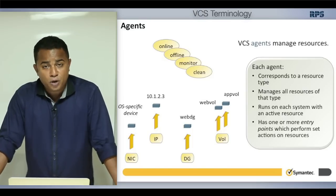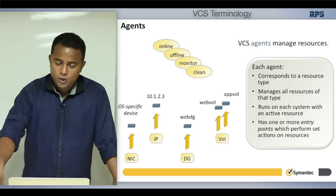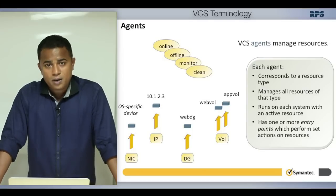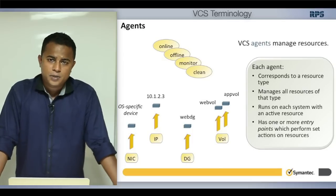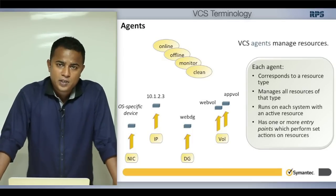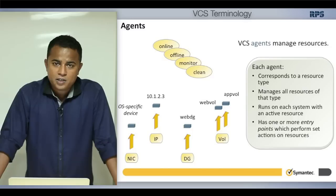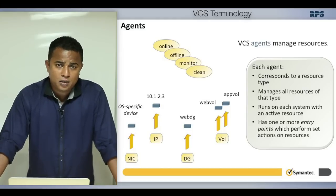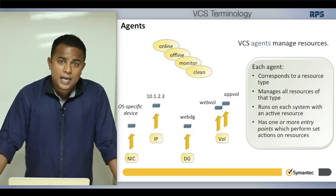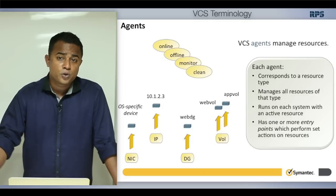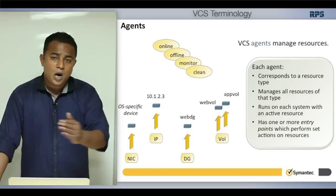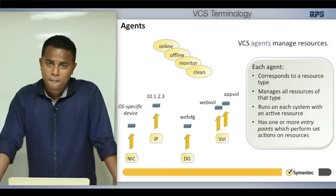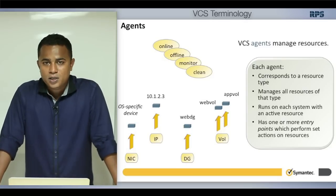Managing a resource type means making it online, making it offline, and monitoring it. Around 50 resource types are available by default and most of their agents are installed during VCS installation. For any custom resource types, you must install the agent first, then add and import those resource types into the cluster — that is the only way for VCS to understand how to manage those resources.